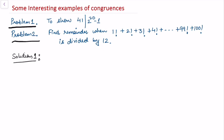For the solution of the first problem, since we want to show 41 divides 2 to the power 20 minus 1, we will not compute 2²⁰ directly by multiplying 220 times. Rather, we will use congruence properties. We know that 2 to the power 1 is congruent to 2 modulo 41.